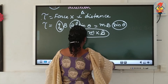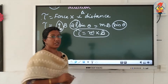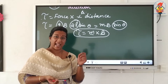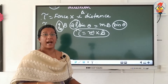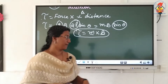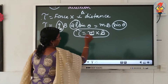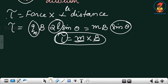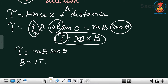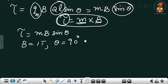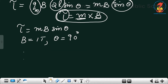In board exams, you may be asked: derive the expression for torque acting on a magnetic dipole and hence define the term magnetic dipole moment in terms of torque. From the equation τ = MB sinθ, if the magnetic field B = 1 T and θ = 90°, then the torque τ equals M.